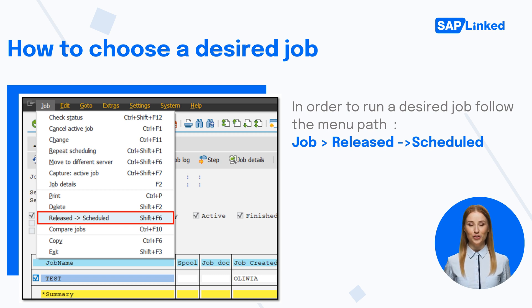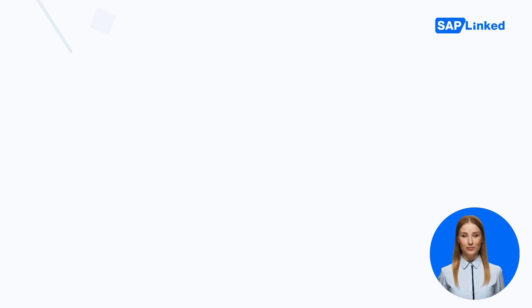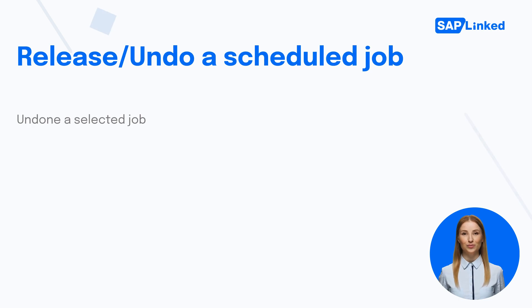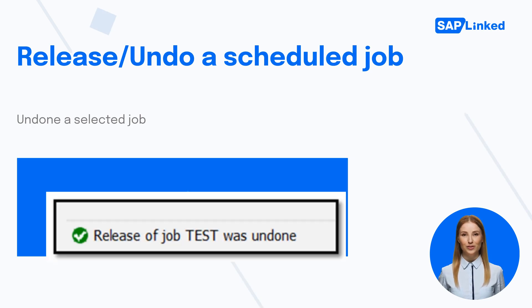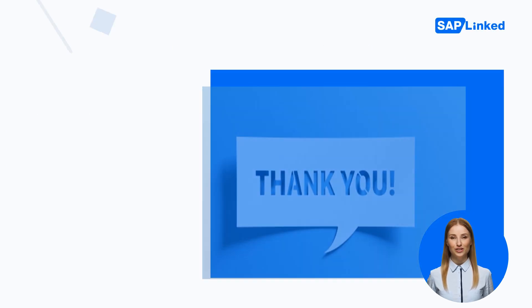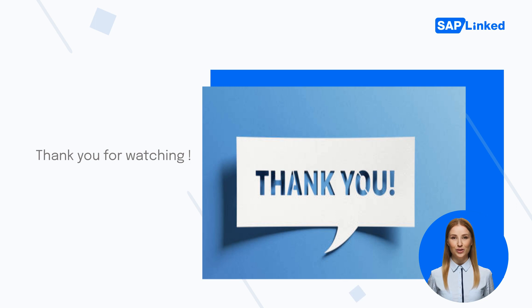Make sure the job you want to release is selected. After you have selected Released Greater Than Scheduled from the menu list, a pop-up with a message appears saying that the release of the job was undone. Thank you for watching, and we hope this demonstration helped you to understand how to reschedule a job in SAP.